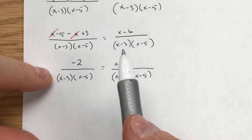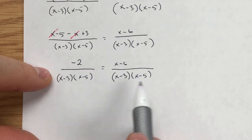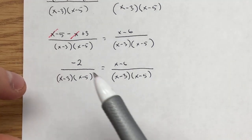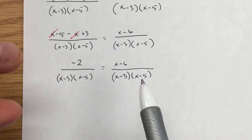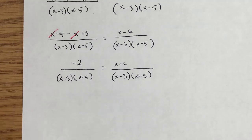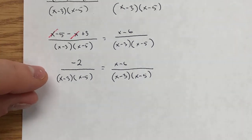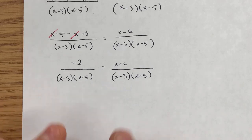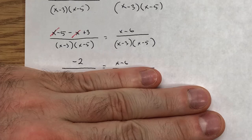Now I notice that both sides have (x - 3)(x - 5) in the denominator. If I multiply each side by (x - 3)(x - 5), those denominators cancel, and I'm left with -2 equals x - 6.